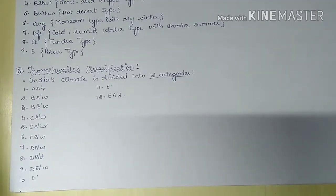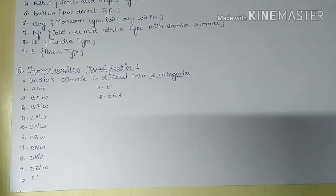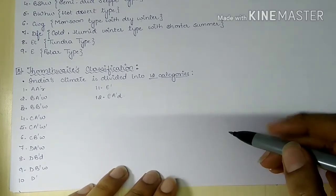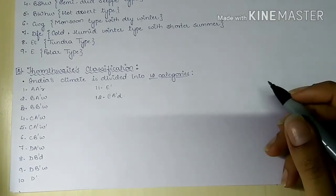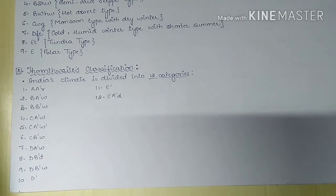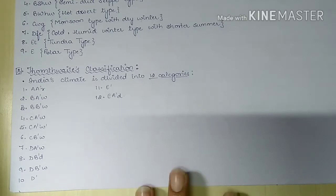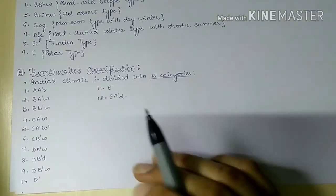Thornthwaite's classification uses the concept of evapotranspiration. He argued that the growth of flora does not depend only on the amount of rainfall but also on the amount of evaporation. If rainfall is very high but evaporation is also very high, the vegetation would be less dense compared to a region where rainfall exceeds evaporation. Based on this, he developed the Precipitation Efficiency Index and Thermal Efficiency Index, dividing India into 12 categories.